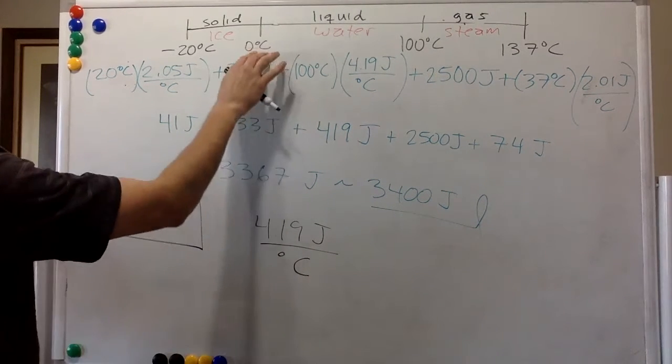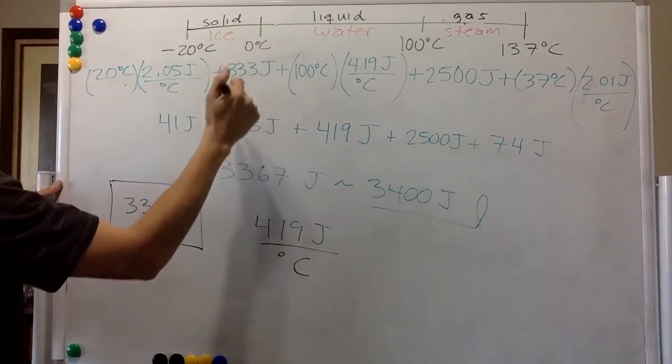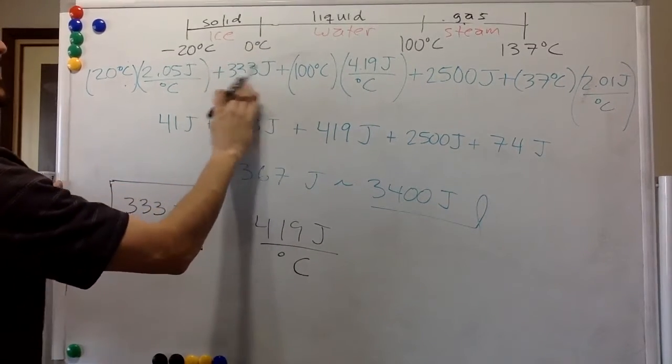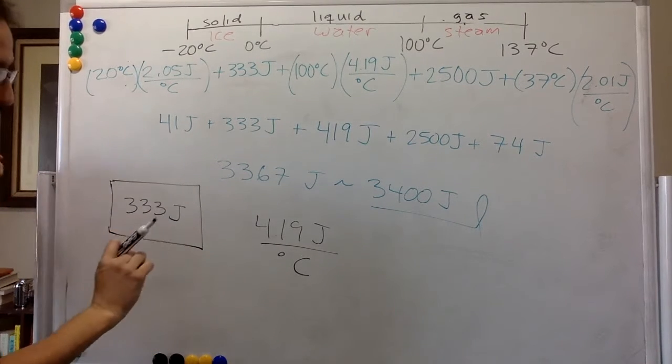So it's going to be zero Celsius. So you just need to put the latent heat in it. So 333 joules.